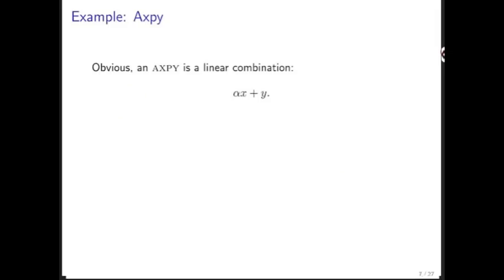We have seen linear combinations before. For example, the Axp operation, which took a scalar times vector x plus y, is a linear combination. In this particular case, beta is equal to 1.